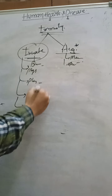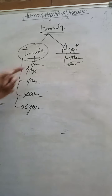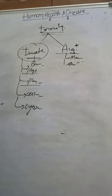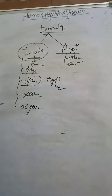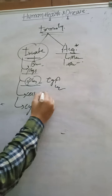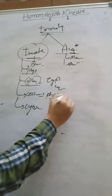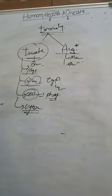Physiological barrier includes the skin as the first line of defense, mucosal lining of the gut, genital tract, respiratory tract, saliva, tears, and HCl in the stomach. IgA antibody and lysozyme are present in tears and saliva. Cellular barrier includes cells with phagocytic nature - natural killer cells, leukocytes, monocytes, and macrophages. Cytokine barrier: virus-infected cells secrete chemicals called interferons - very important.